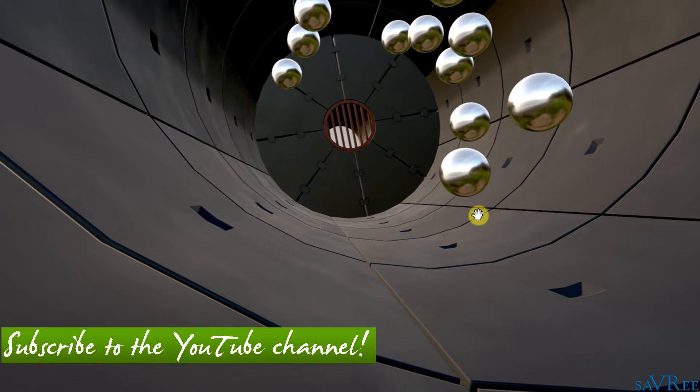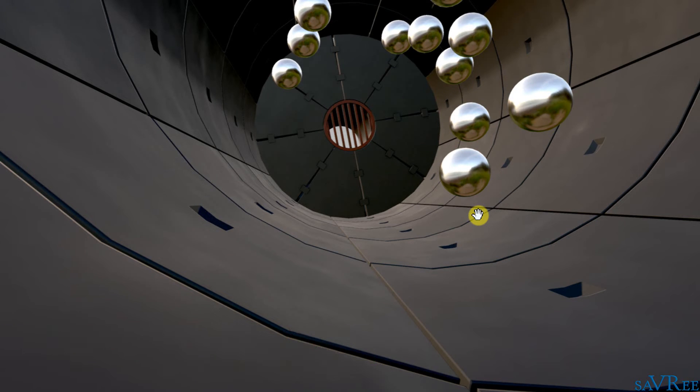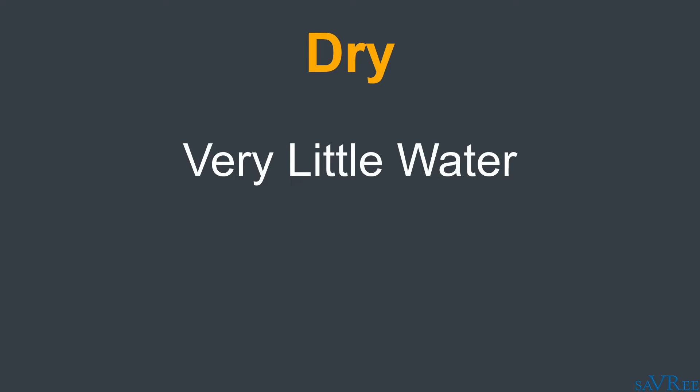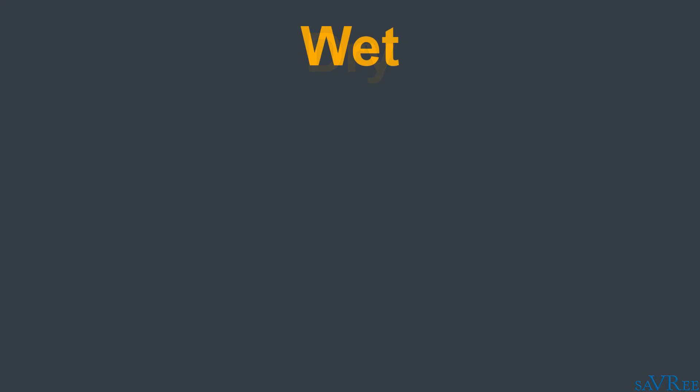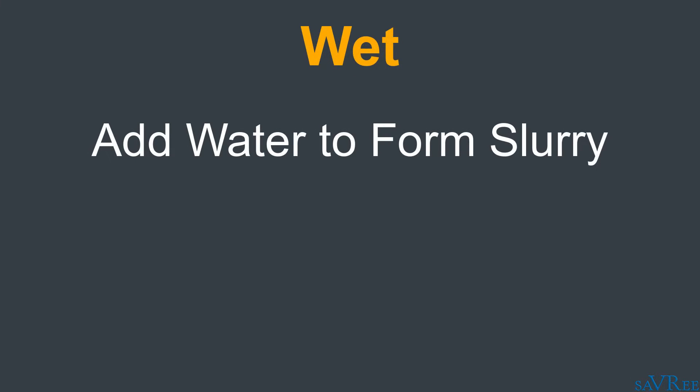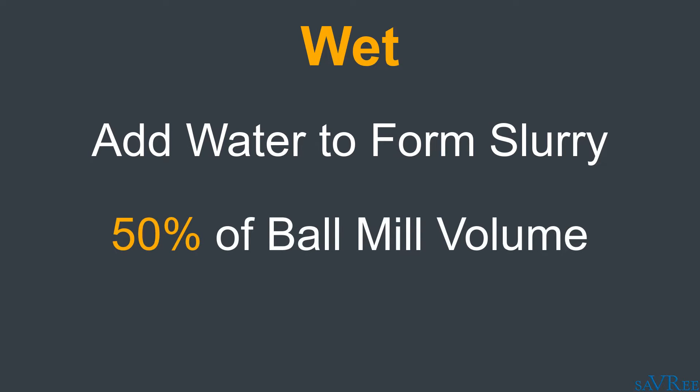Now if this ball mill was being used for ore, for example, or hard rock, then normally the ore will be crushed before it enters the ball mill, and then it will be fed into the ball mill either wet or dry. Dry means that we use very little water or moisture, and wet means that we add water and form a slurry. And that slurry is going to occupy about 50% of the ball mill's entire volume.